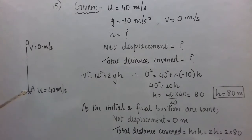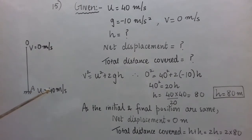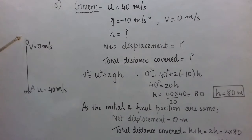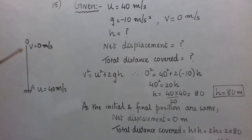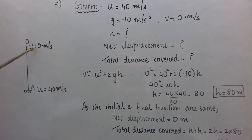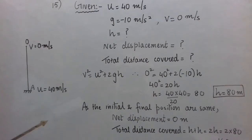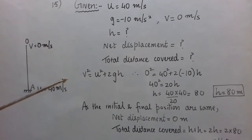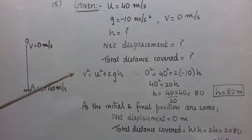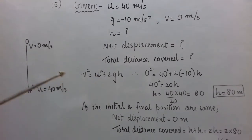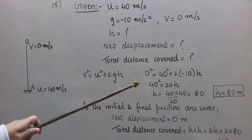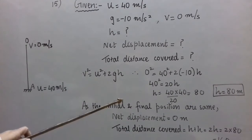Let A be the initial position of the stone with u equal to 40 meter per second. Let O be the maximum height reached; O-A is the maximum height. At O, the final velocity v is 0 meter per second. To find h, we again use the third equation of motion — v² = u² + 2gh — since t is not mentioned. Here g is negative, so after putting the values we get h equal to 80 meters.